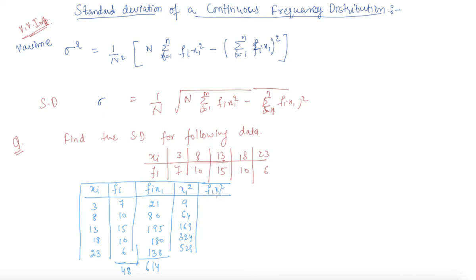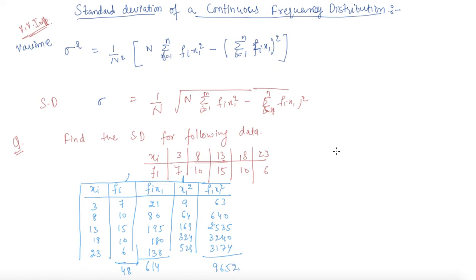Multiplying the fi and xi² columns to get fi·xi²: 63, 640, 2535, 3240, 3174. The summation of all fi·xi² values comes out to be 9652.